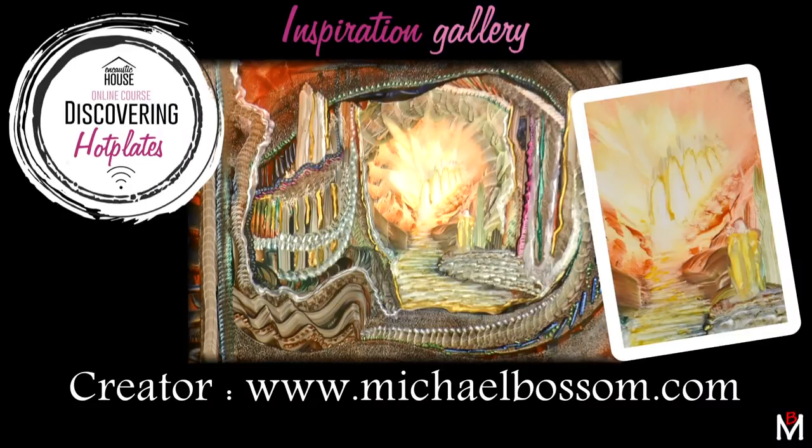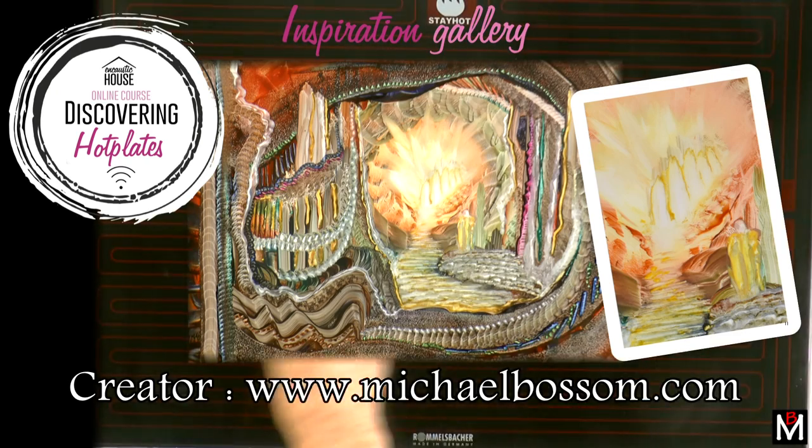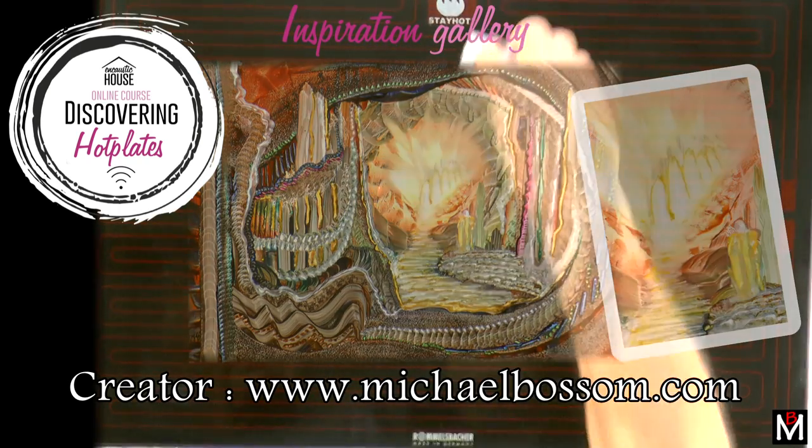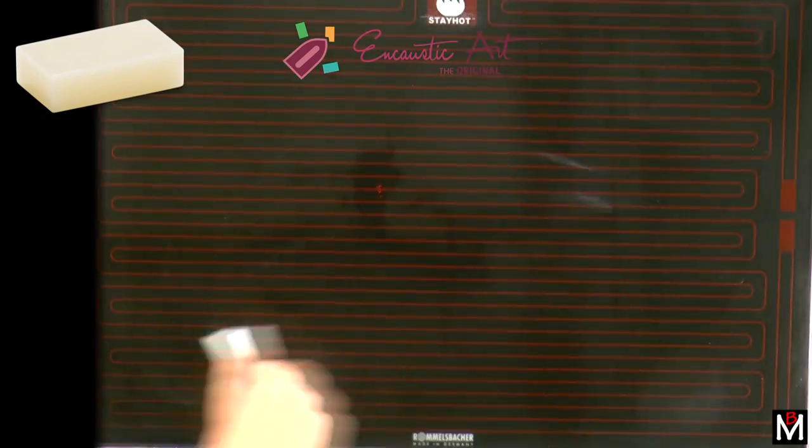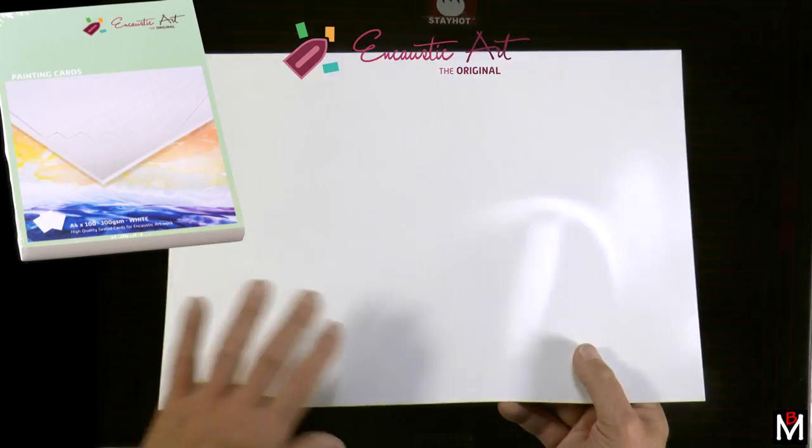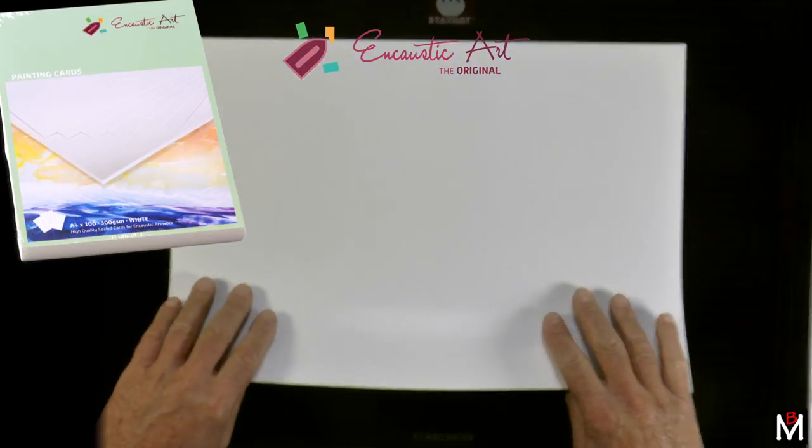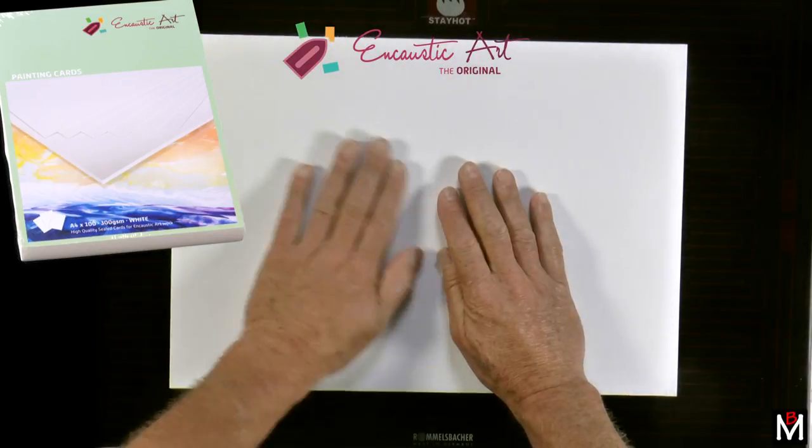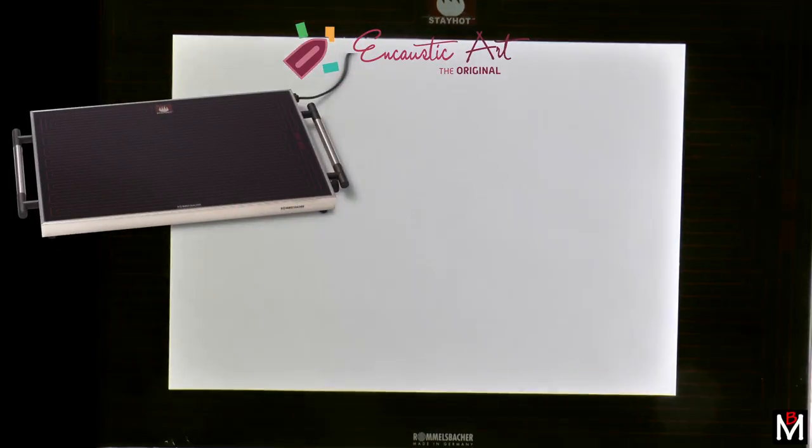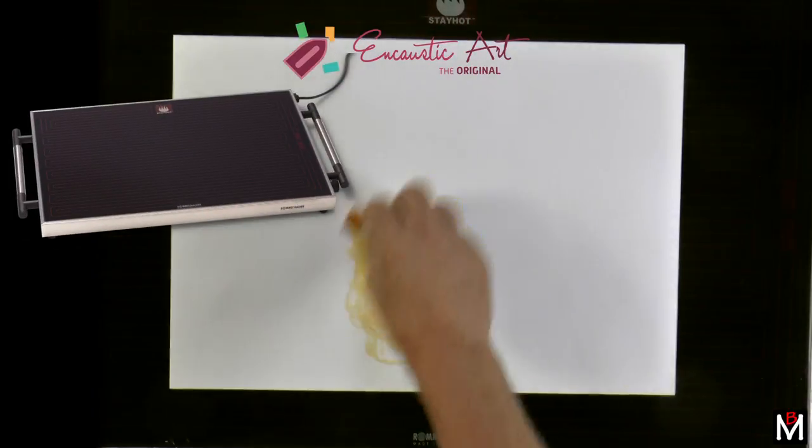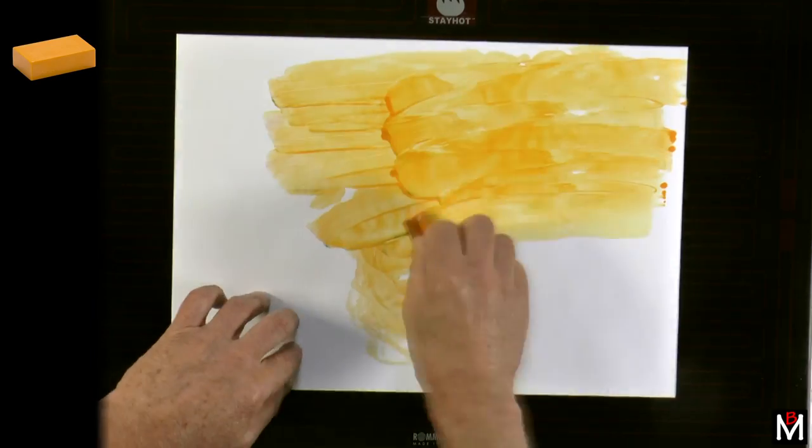This image comes from the Discovering Hot Plates inspiration gallery and is called Angels Are Descending. Starting with encaustic art clear wax on the hot plate, using A3 white encaustic painting card and an electric hot plate large enough to heat this card perfectly during the entire process.